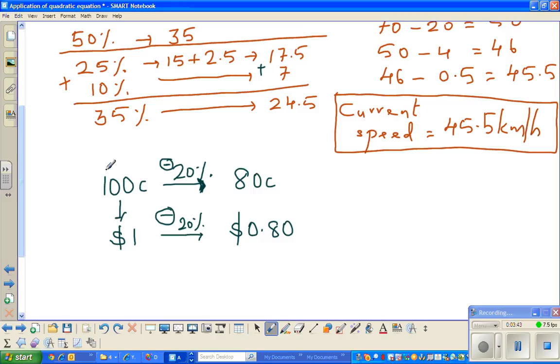What I'm saying is, if you've got 100 cents and you're reducing by 20%, you will get 80 cents. Because 20% of 100 is 20. If you want to understand how I got 80, it's 100 take away 20 gives me 80. The same 100 cents, you can understand because you should be knowing that $1 is equal to 100 cents.